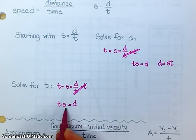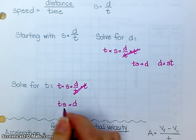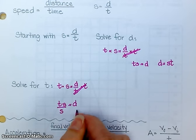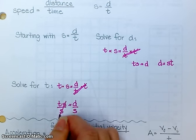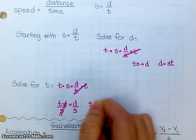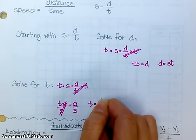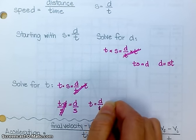It's t times s, so it's the opposite operation of multiplication. I'm going to divide both sides by s, which gets rid of it here. Time is distance divided by speed.